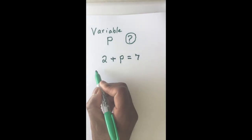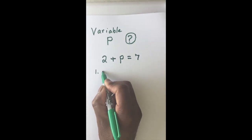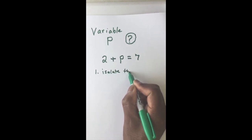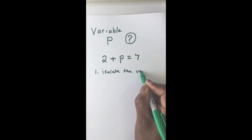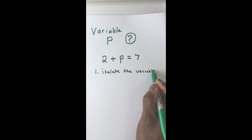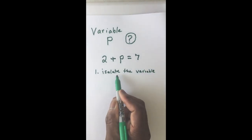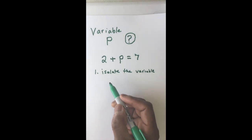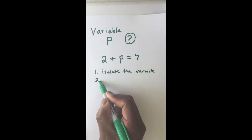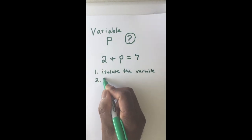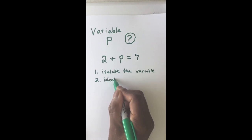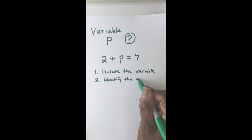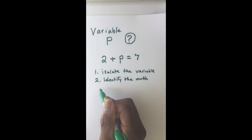Remember, the first step we want to do is we want to isolate the variable. In other words, we want to get it by itself. In order to do that, we need to identify the operation — the math operation.